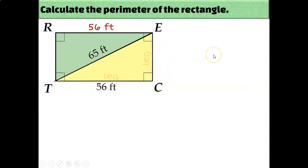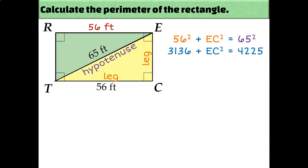Leg squared plus leg squared equals hypotenuse squared. I can write that 56 squared plus EC squared is equal to 65 squared. And then just solve that equation. And we get an answer of 33 feet for EC.